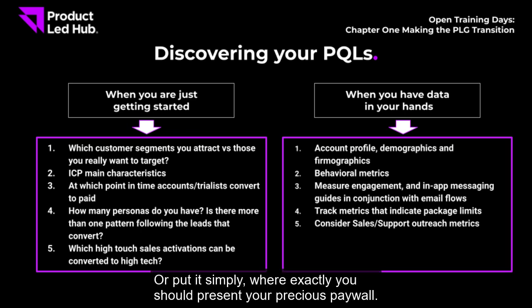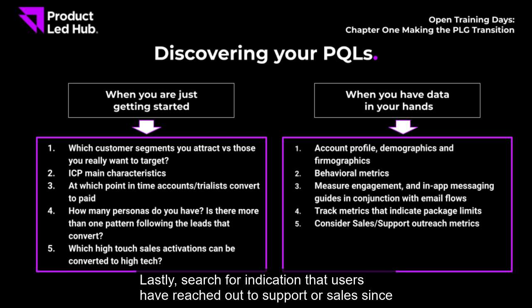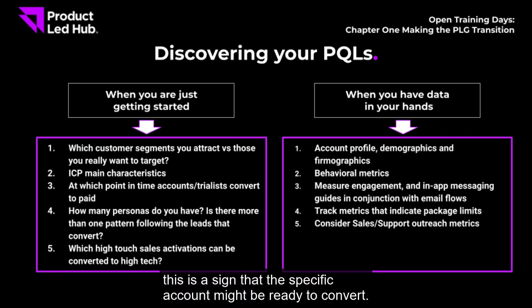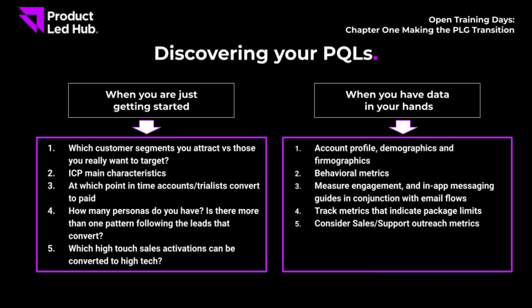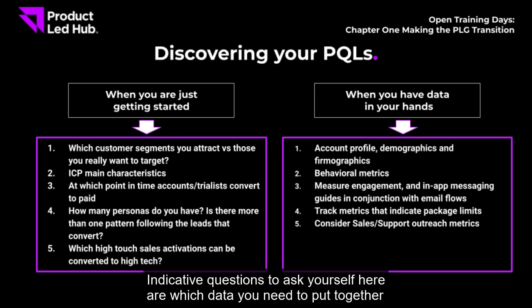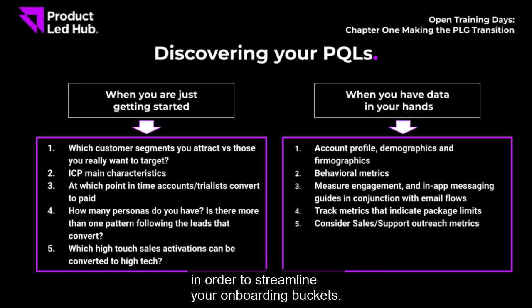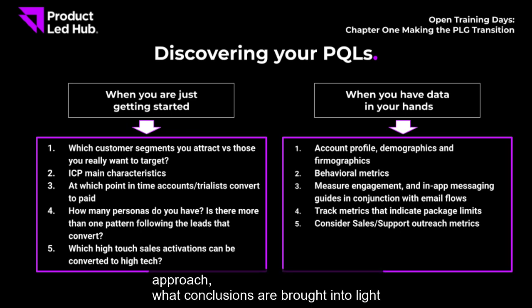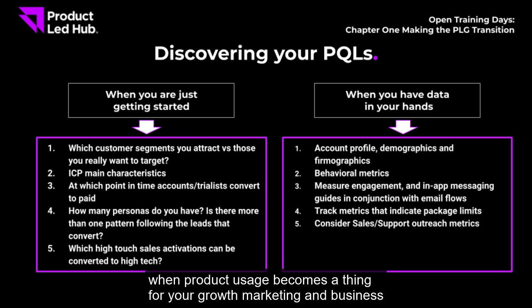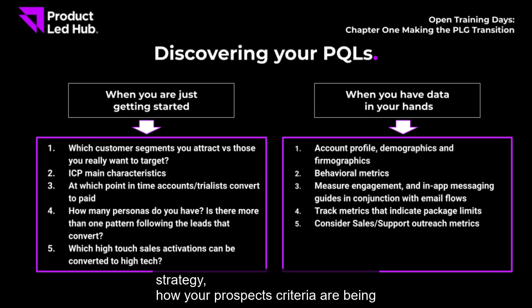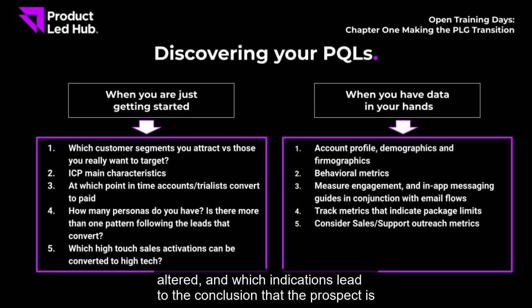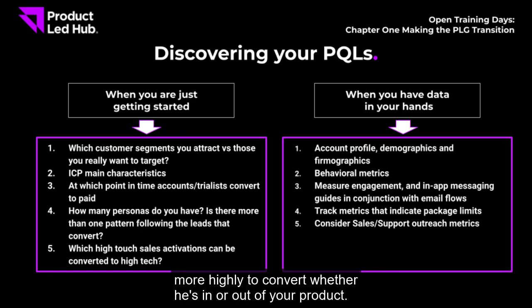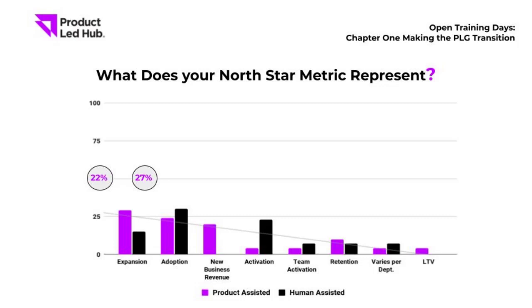Search for indication that users have reached out to support or sales, since this is a sign the account might be ready to convert. Key questions to ask: which data do you need to streamline your onboarding buckets? When getting started with a PLG approach, what conclusions emerge when product usage becomes central to your go-to-market strategy, and how are your prospect criteria being altered?